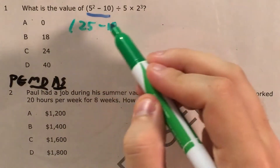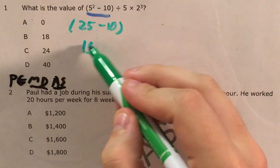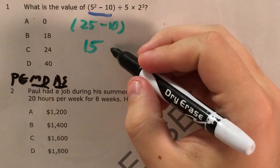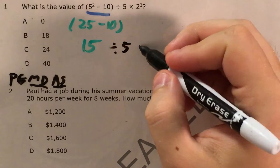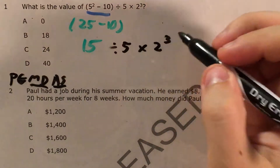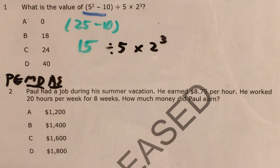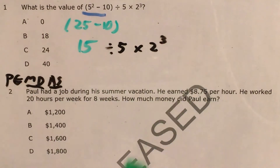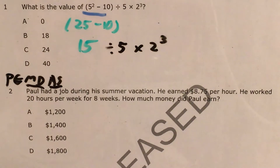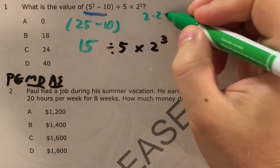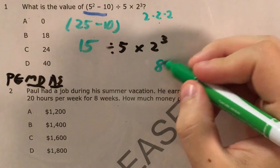Now that I just have numbers inside this set of parentheses, I can say that this is 15. We still have 15 divided by 5 times 2 cubed. At this point I'm done with parentheses, but I do see something with an exponent. 2 cubed is the same thing as 2 times 2 times 2, which is going to be 8.